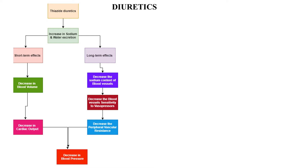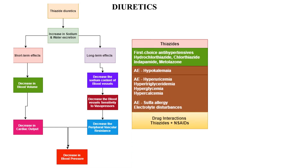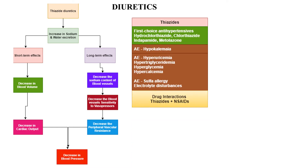Long-term effects of thiazides include decreasing the sodium content of blood vessels, decreasing sensitivity of blood vessels to vasopressors such as adrenaline and noradrenaline, and thus chronically reducing peripheral vascular resistance. Thiazides are the first-choice antihypertensives: hydrochlorothiazide, chlorothiazide, indapamide, and metolazone. Adverse effects include hypokalemia, hyperuricemia, hypertriglyceridemia, hyperglycemia, and hypercalcemia. All are sulfa drugs, so they may cause sulfa allergy and electrolyte disturbances. Drug interactions: NSAIDs may reduce the efficacy of thiazides.